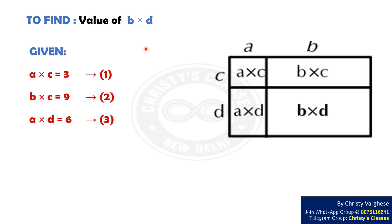Let us see what is given in the question. A into C equals 3 — let this be equation 1. B into C equals 9 — let this be equation 2. A into D equals 6 — let this be equation 3.